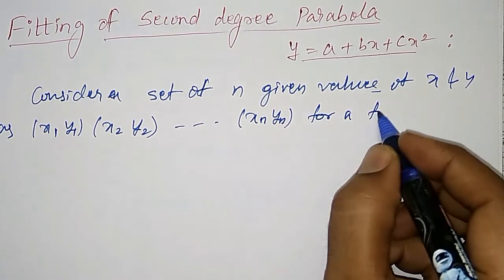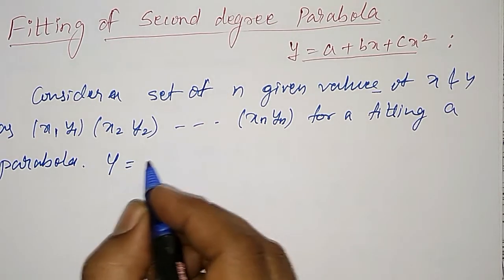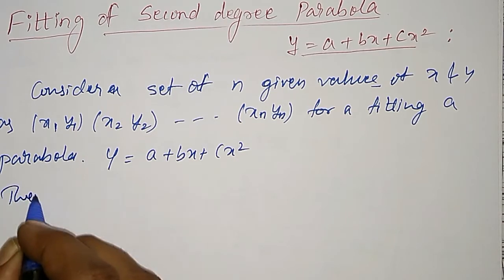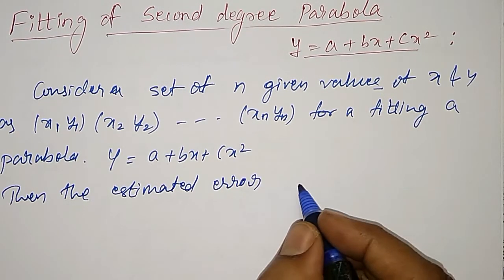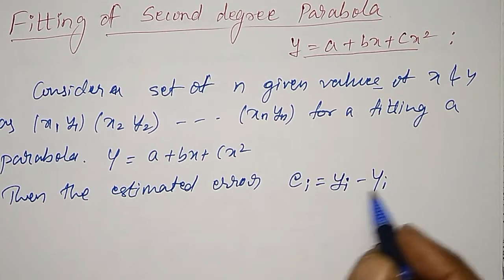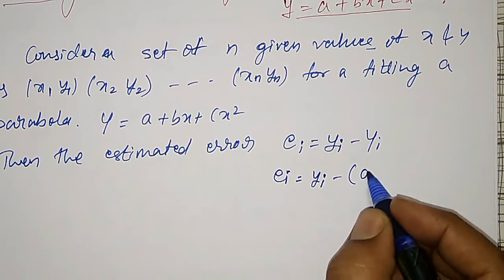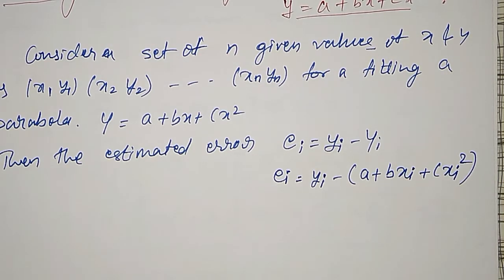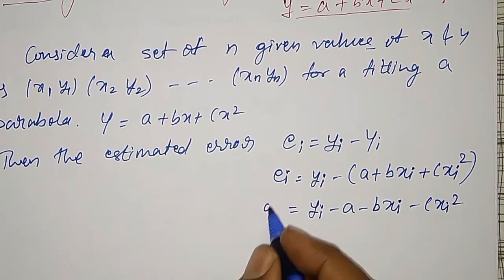For fitting a parabola, capital Y equal to a plus bx plus cx square, the estimated error EI equal to small yi minus capital Yi. Since capital Yi is different for each xi, EI equal to yi minus a minus bxi minus cxi square.